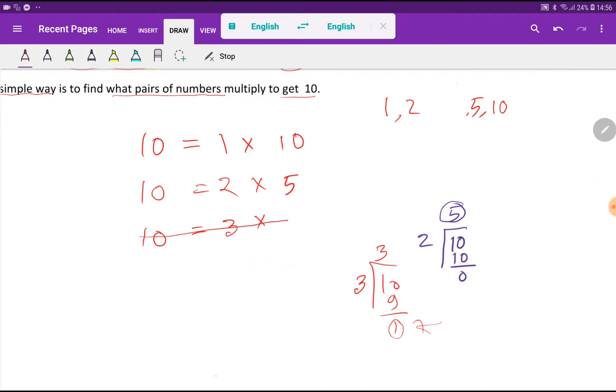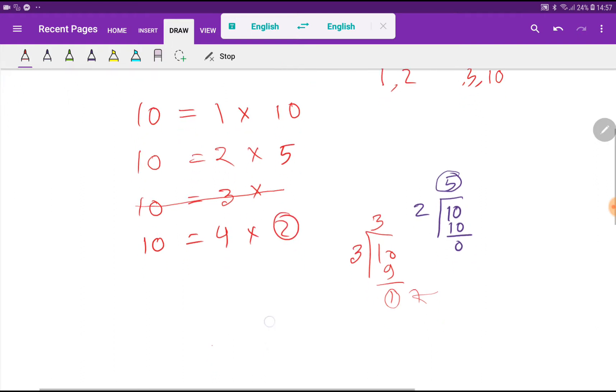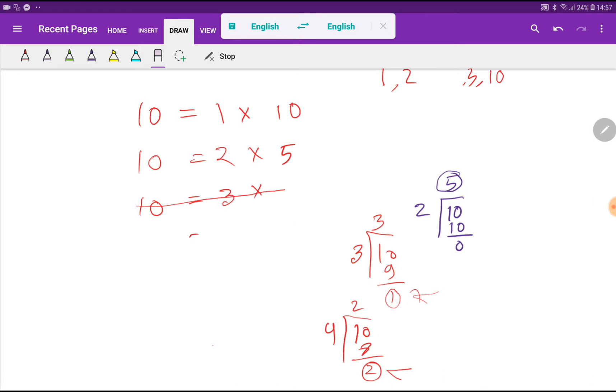Now I will try for 4. Then what number will come here? 4 times 2 is 8, with remainder 2. So 4 is not the factor of 10.